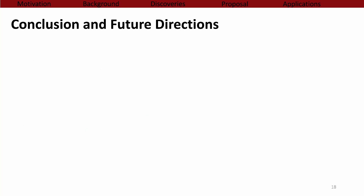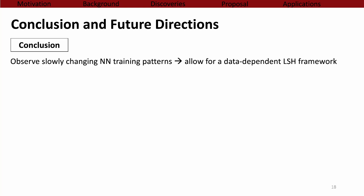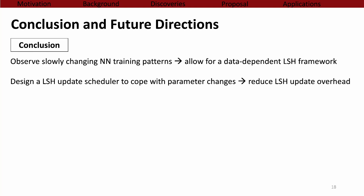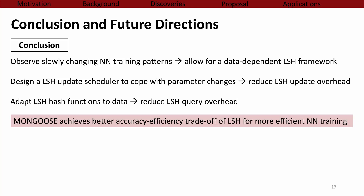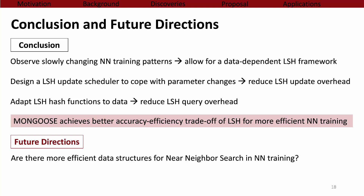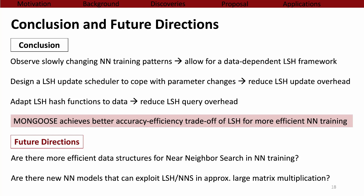In summary, we present a key observation that hash codes of model parameters change slowly, which provides the space for a data-dependent LSH framework. Based on this insight, we designed a smart scheduler to update LSH according to parameter changes, and we managed to learn and adjust LSH hash functions based on current parameters at low cost. Our framework Mongoose achieves better accuracy-efficiency trade-offs than prior work for efficient neural network training. Future directions include designing more efficient data structures for nearest-neighbor search in neural network training, and exploring other neural network models or new ones that can exploit LSH for approximate large matrix multiplication.